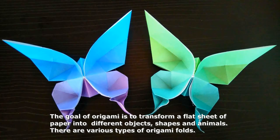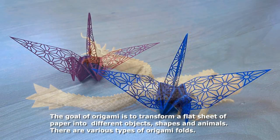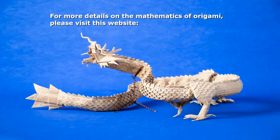The goal of origami is to transform a flat sheet of paper into different objects, shapes and animals. There are various types of origami folds. For more details on the mathematics of origami, please visit this website.